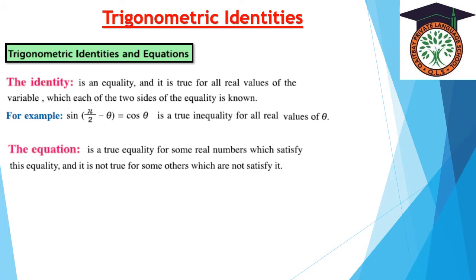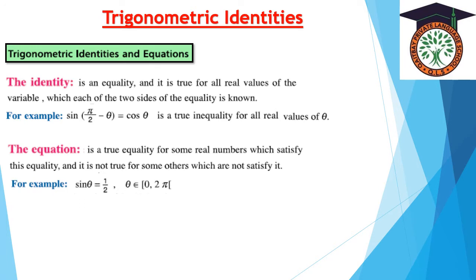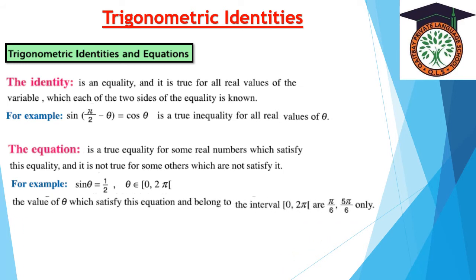Number two: an equation is a true equality for some real numbers which satisfy it, and not true for others which do not. For example, sin θ = 1/2; we find θ = 30° and θ = 150°, which belong to [0, π]. The values that satisfy the equation are π/6 and 5π/6.